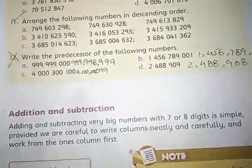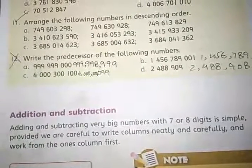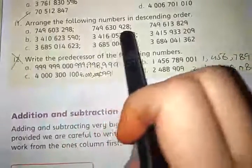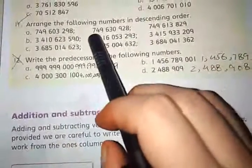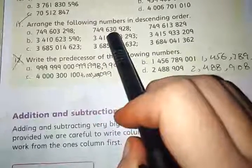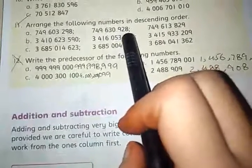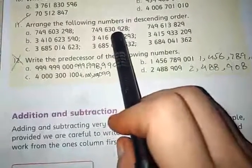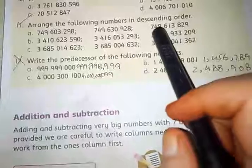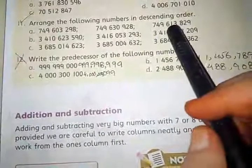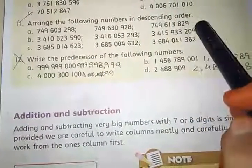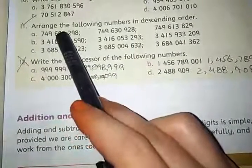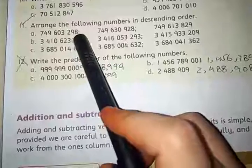First of all we have to find the greatest value in this group of numbers, and the greatest value in this group of numbers is 749,630,928. The next value is this one, 749,630,829, and the last one is 749,603,298.